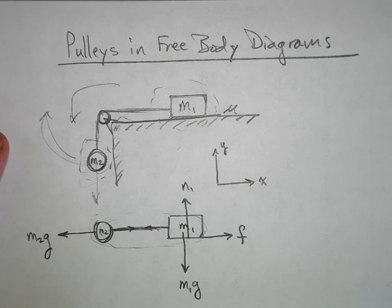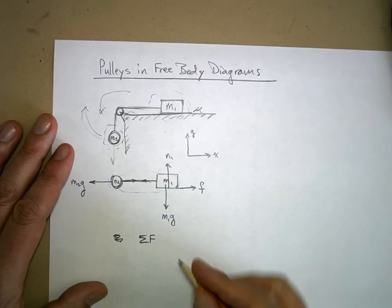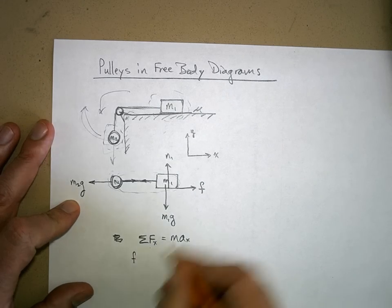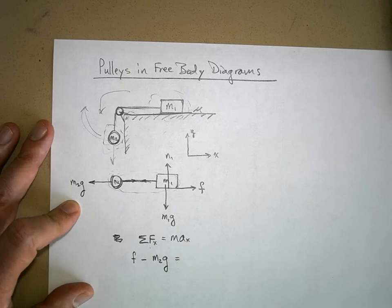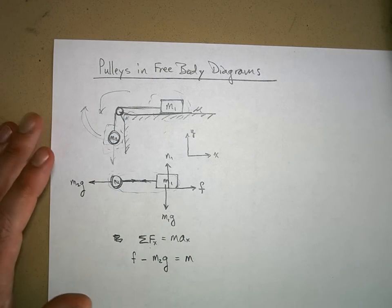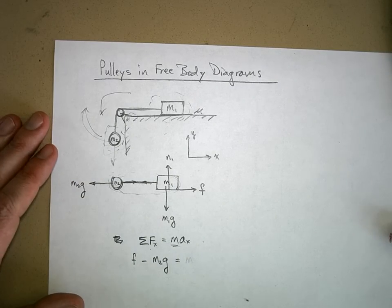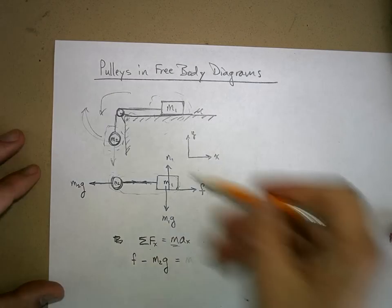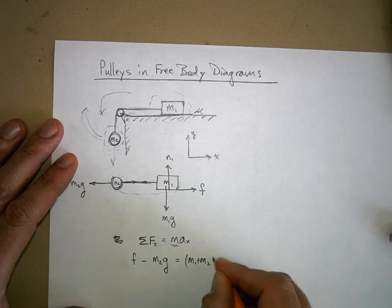I can sum the forces in the x direction equals ma in the x direction. And so I'm going to have the force of friction minus m2 times g equals ma. Oh, now here's the trick though. Here's one thing you got to realize. Equals ma. What does this m represent? It represents the mass of my free body. So what is the mass of my free body in this situation? Yeah, it's m1 plus m2, exactly. So it's m1 plus m2, and that's something that you have to remember to do.